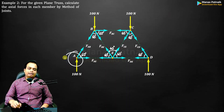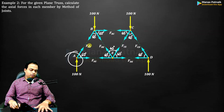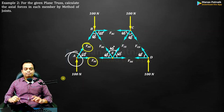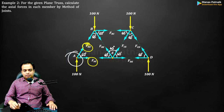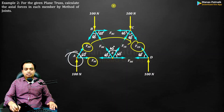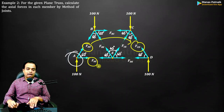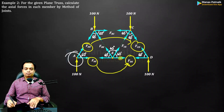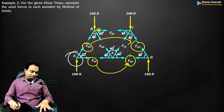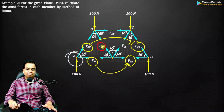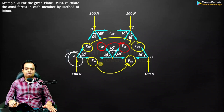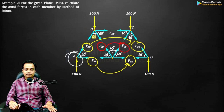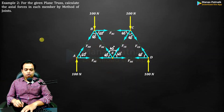We can start from joint A, as we have to deal with only two unknown forces: FAB and FAE. FAB will be equal to FCD since the entire structure is symmetrical, and FAE will eventually equal FDE. When we calculate FBE, that FBE will equal FCE. We can also calculate FBC considering either joint B or joint C. Let's go ahead with joint A.